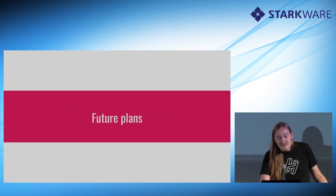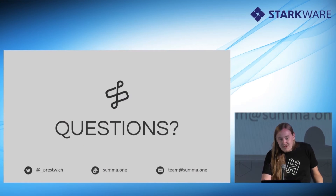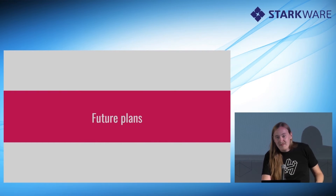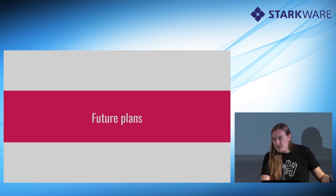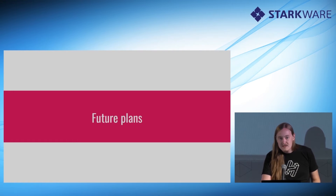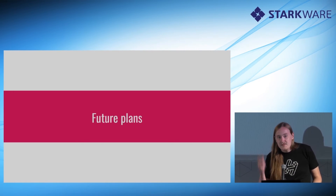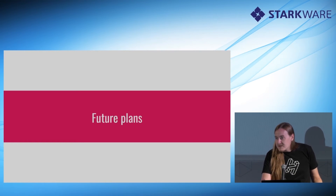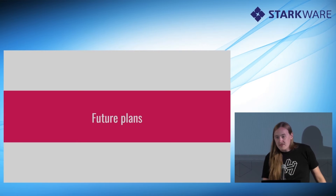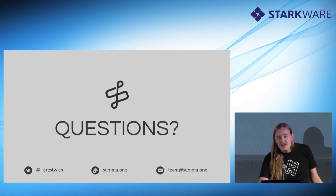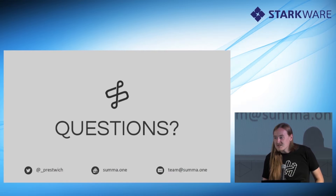Future plans: right now we're working on a Bitcoin relay and Bitcoin-based contracts in Ethereum, Cosmos, and other chains. I would love to apply ZKPs to other problems in cross-chain communication, but it's very difficult to tell what's useful to other people and to engineers. I would love to take questions or suggestions.